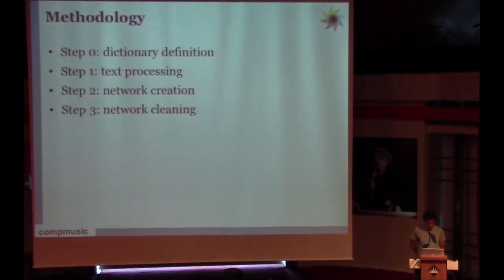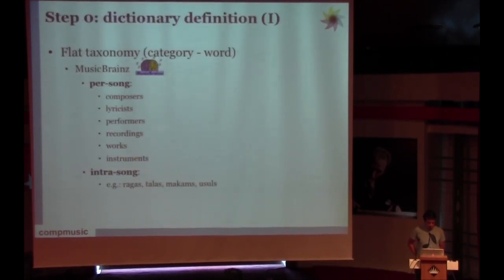This is basically the method that we have followed. It consists of four steps, or let's say there is a pre-step and three steps of the methodology. The first, or step zero, is the dictionary definition. By dictionary definition, we define the dictionary as a flat taxonomy of category-word from music brainz.